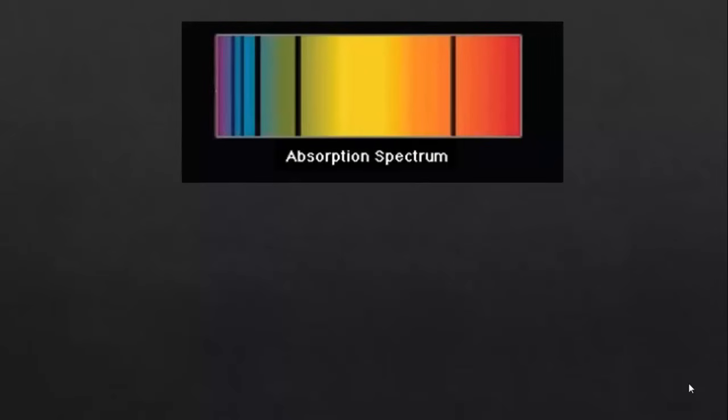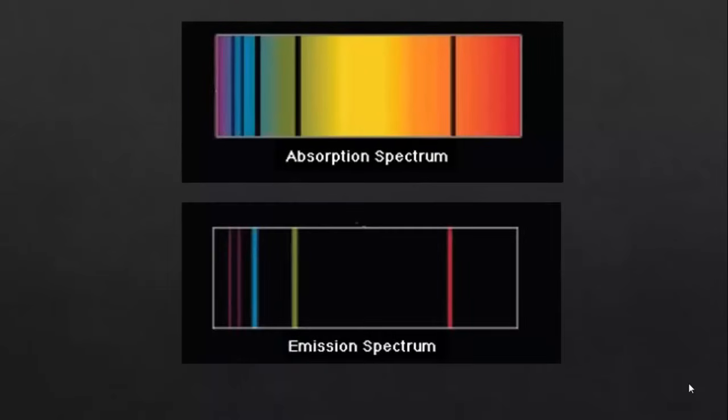By looking at absorption line spectra and comparing them to the emission spectra for various elements, we can work out what elements are in the sun's atmosphere without us leaving the Earth. In fact, helium was discovered in the sun before we found any on the Earth using this technique of line spectra.